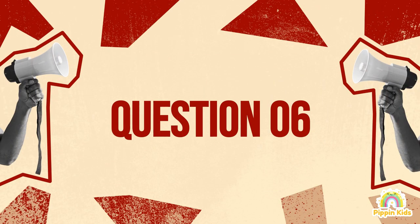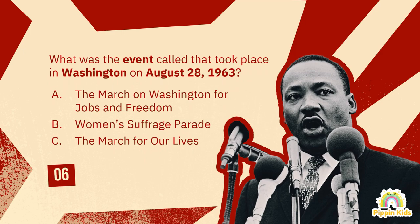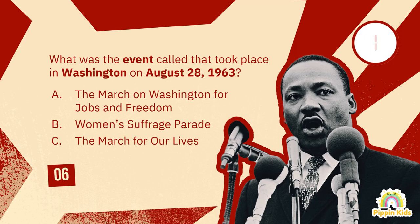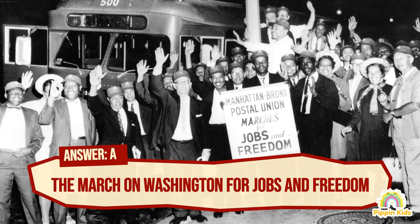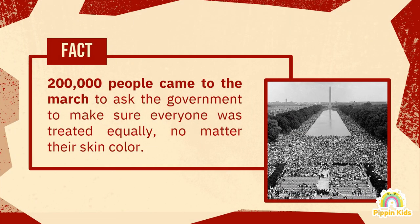Question number six: what was the event called that took place in Washington on August 28, 1963? A) The March on Washington for Jobs and Freedom. B) Women's Suffrage Parade. C) The March for Our Lives. The answer is A, the March on Washington for Jobs and Freedom.